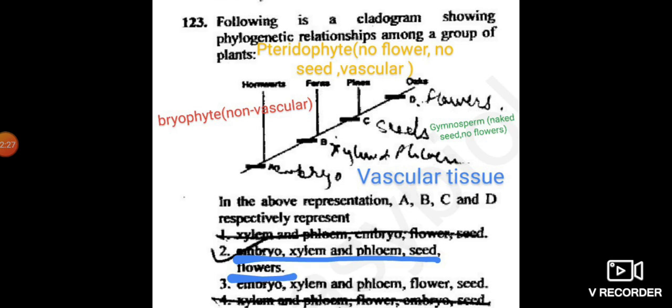In this manner, first you need to recall the properties of the group of plants. First option is xylem and phloem, embryo, flower, seed.